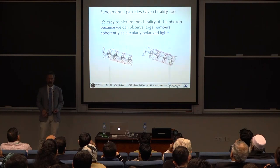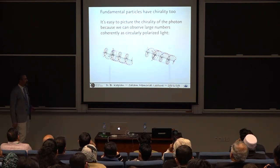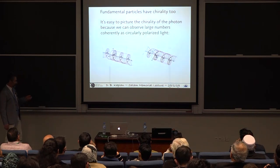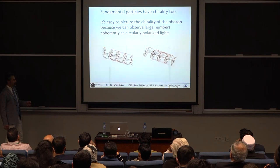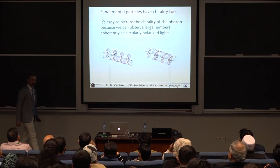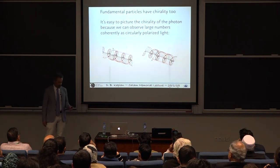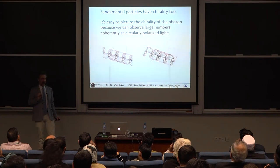Now fundamental particles also have a handedness which is maybe a little harder to picture. With light we can figure it out. We can see it. Because light is a special type of particle called the boson where you can put many, many particles together and they act then like a classical field. We can see classical fields with our instruments.